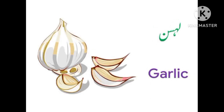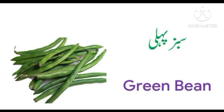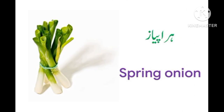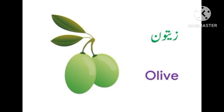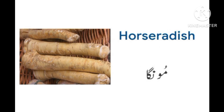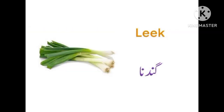Garlic (lehsan), green bean (subz phalli / lobia), carrot (gajar), mustard leaves (sarson ke patte), spring onion (hari pyaz), olive (zaitoon ka phal), lemon (nimbu), horseradish (moonga), leek (gandana).